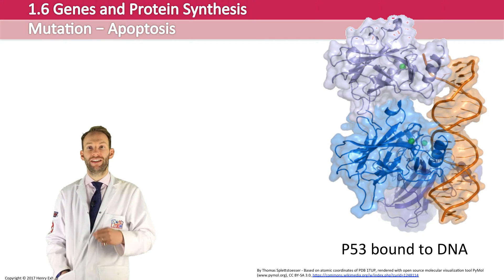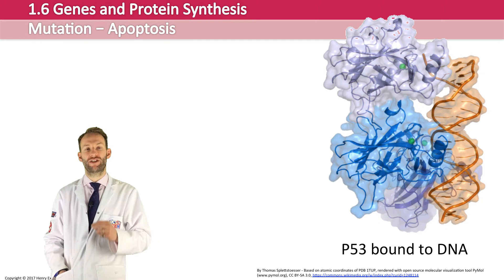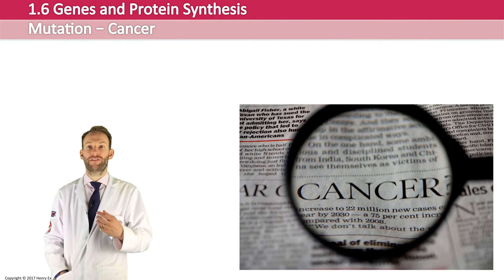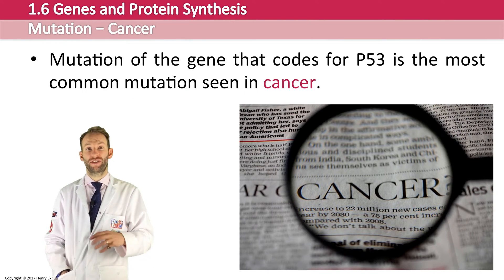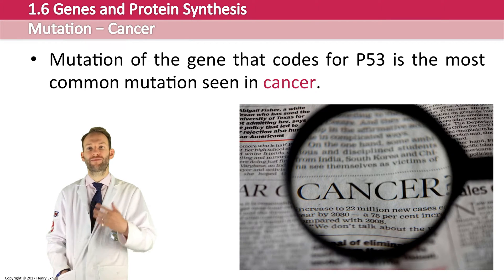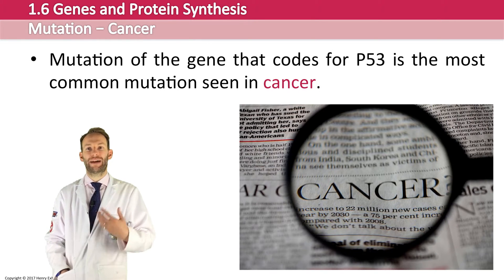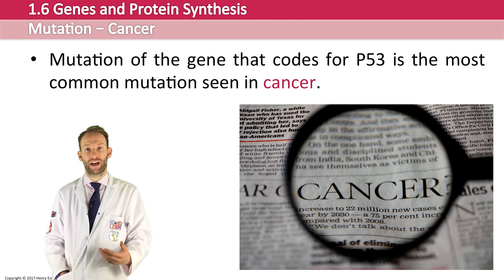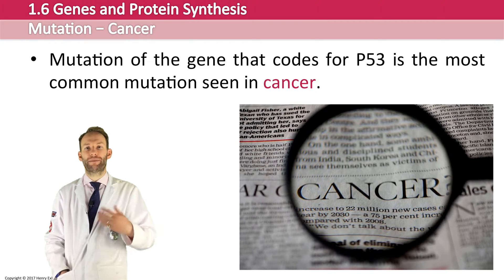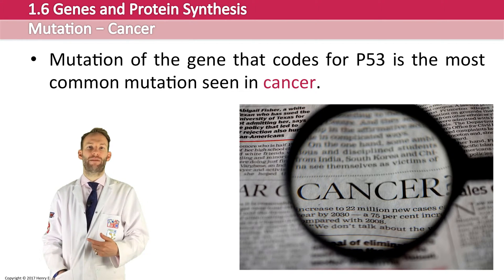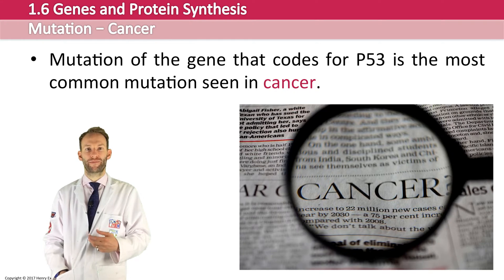Mutation of the gene that codes for p53 is the most common mutation seen in cancer. If the mutation causes less p53 to be produced, then apoptosis doesn't occur, rapid cell division occurs instead, tumor formation happens, and cancer develops.